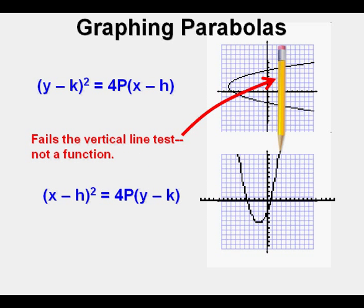But this version above, with the y squared, fails the vertical line test because the vertical line touches the curve more than once and is therefore not a function. And it's because we have to take a square root to solve for y in order to graph it.